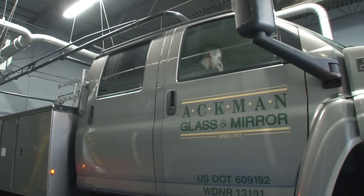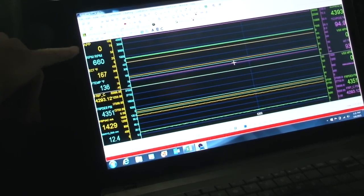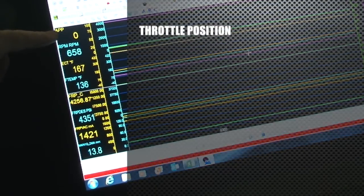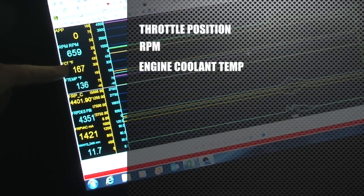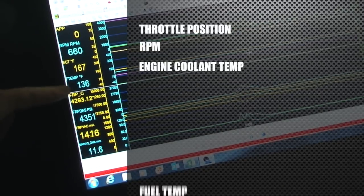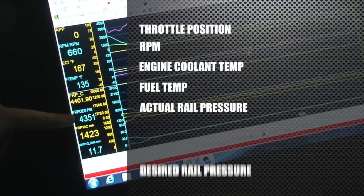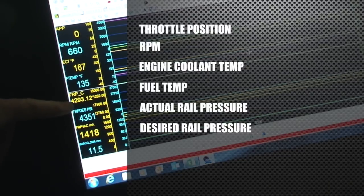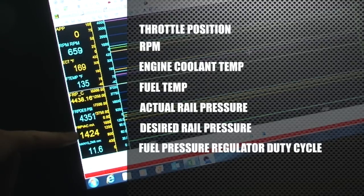We're in the cab and Owen has pulled up a data stream so we can see all the important things going on. APP is throttle position — zero at idle, changes as I rev the truck. RPM. Engine coolant temperature at 167 right now — we're going to see it creep up past 210. Fuel temperature — as that goes up, our problem should get worse. Here's our actual rail pressure and our desired rail pressure. P0087 means we have deviation between those two values. This 1400 number is our fuel pressure regulator duty cycle.